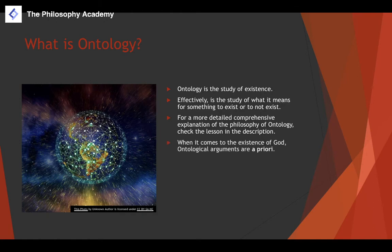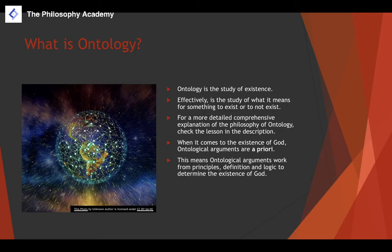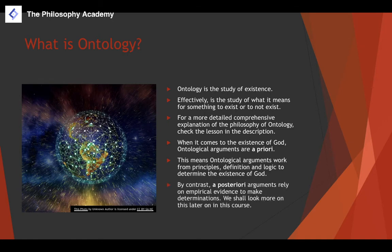When it comes to the existence of God, ontological arguments attempt to prove God's existence a priori, meaning they work from principles by definition and use logic rather than empirical evidence. By contrast, an a posteriori argument relies on empirical evidence and makes determinations inductively rather than deductively.